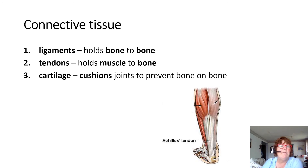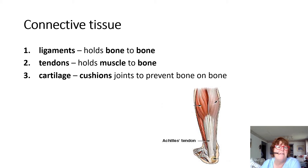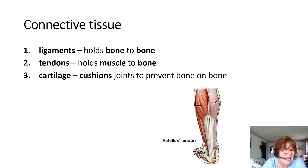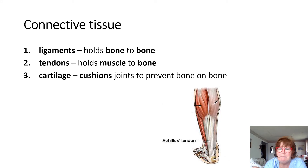Ligaments connect bones to bones; tendons connect muscle to bones. Think about the Achilles tendon — it's connected to the back of your muscle and to the big bone on your heel. If you've ever had a turkey leg and stripped the meat off, those thick tissues that hold the meat on the bone are actually tendons. Ligaments hold the thigh bone to the hip bone.